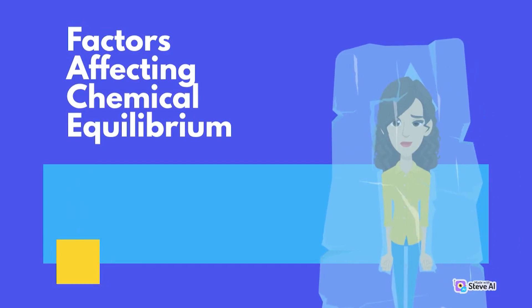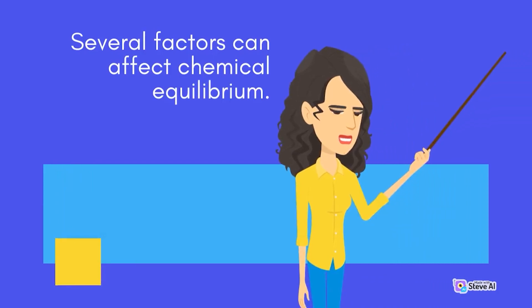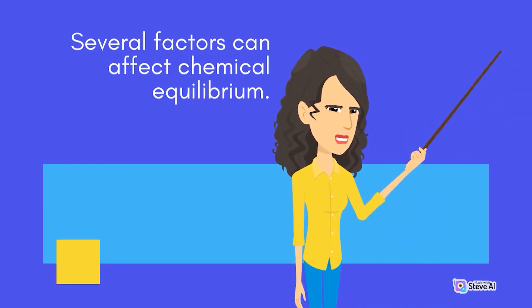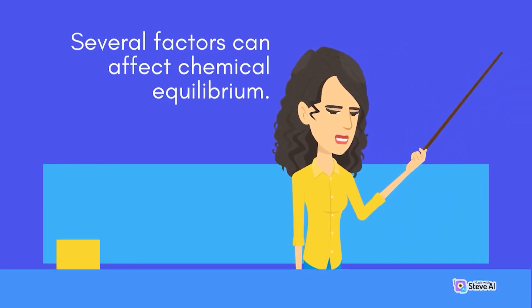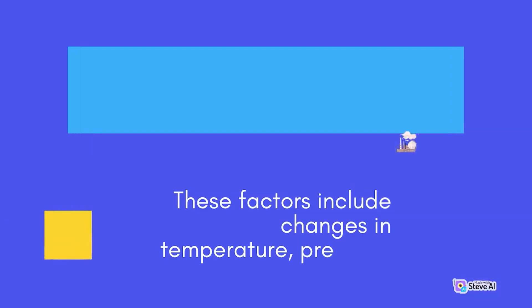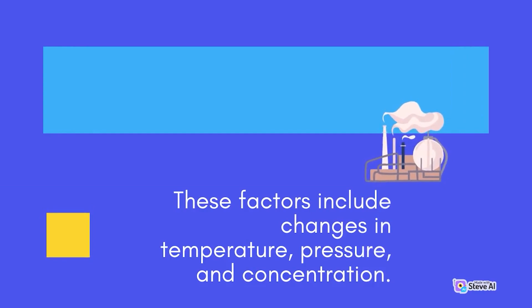Factors affecting chemical equilibrium. Several factors can affect chemical equilibrium. These factors include changes in temperature, pressure, and concentration.